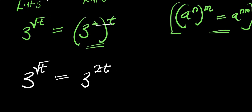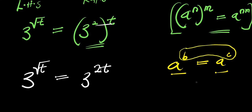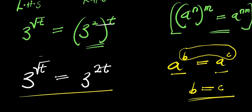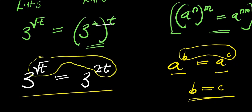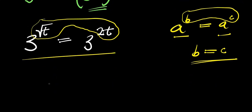Now consider this: if you have a to the power of b and this equals a to the power of c, considering the fact that the bases are the same, you can compare the exponents — that means b equals c. Applying this identity here means we are going to compare these exponents, so we simply have the square root of t equals 2t.